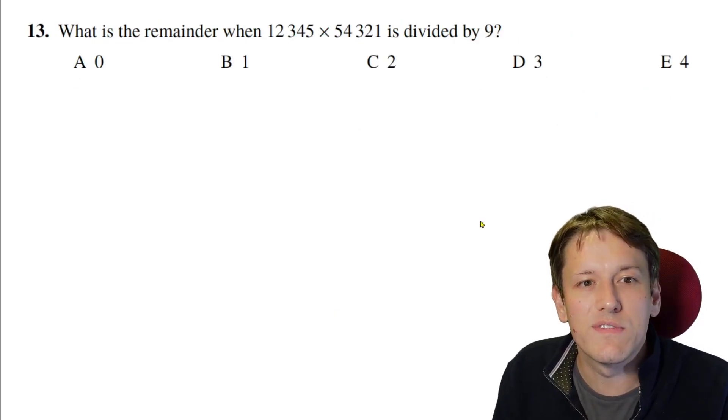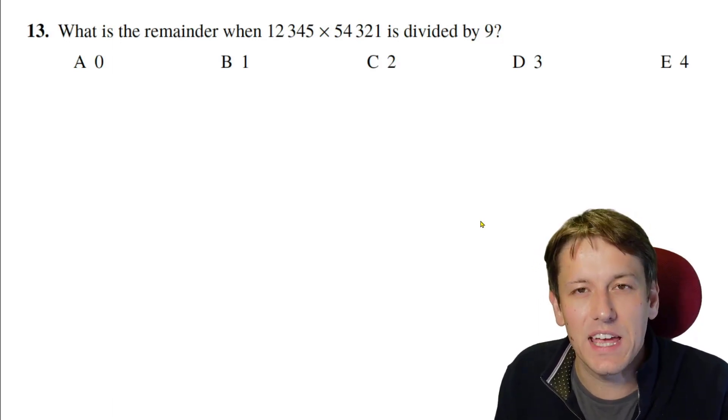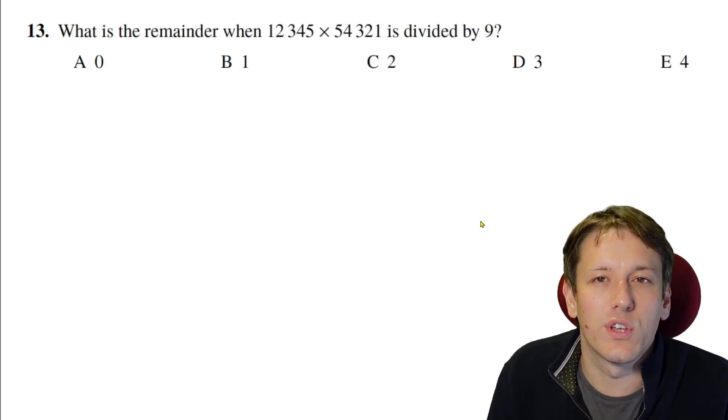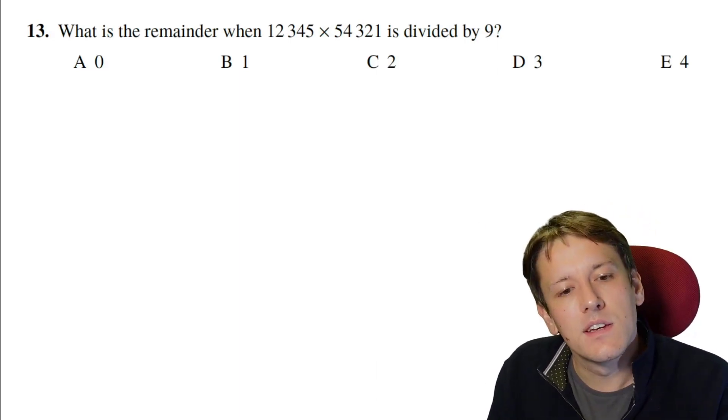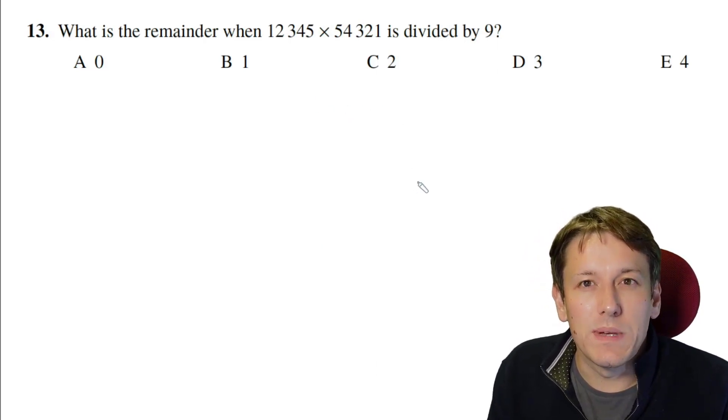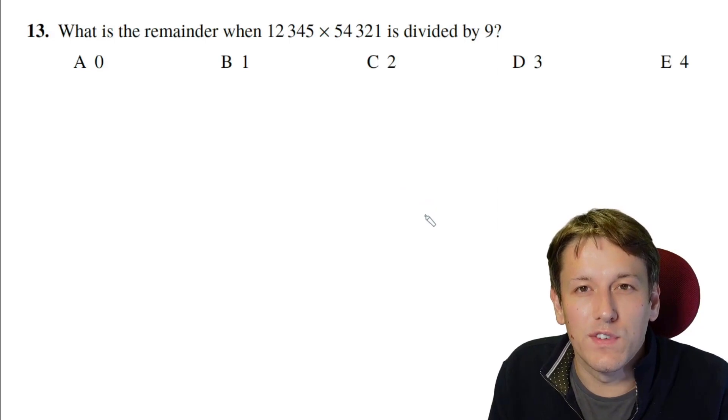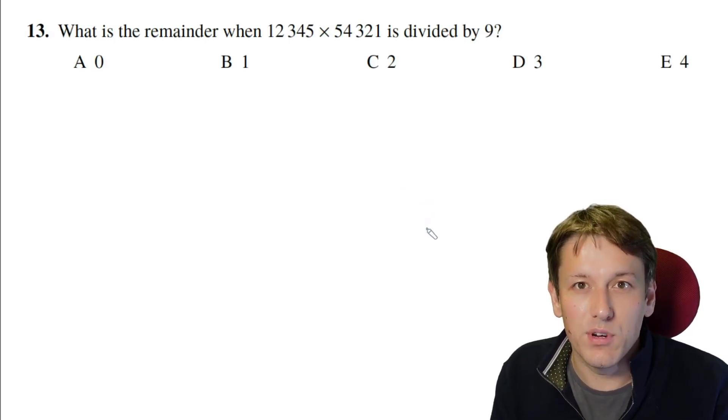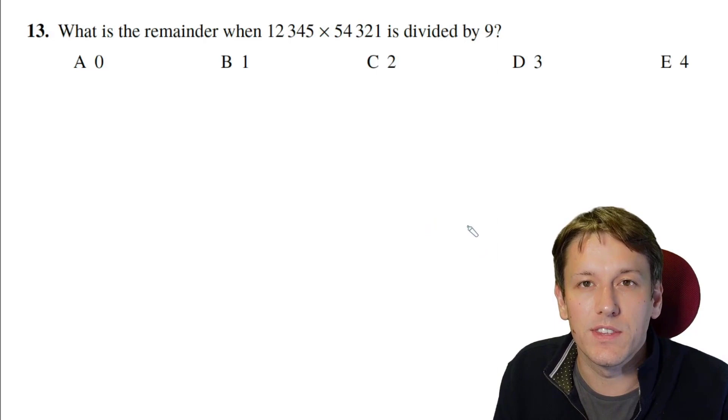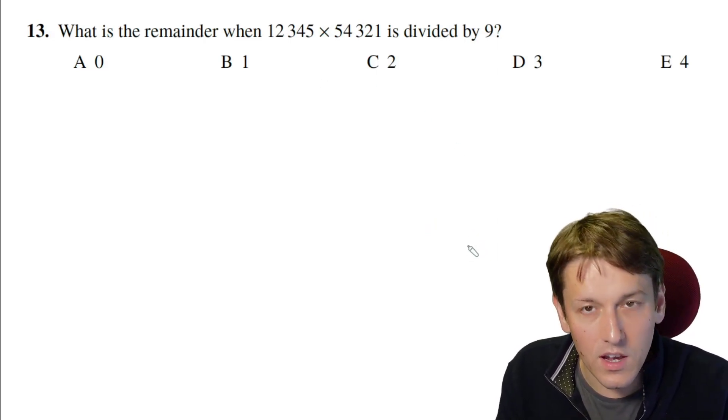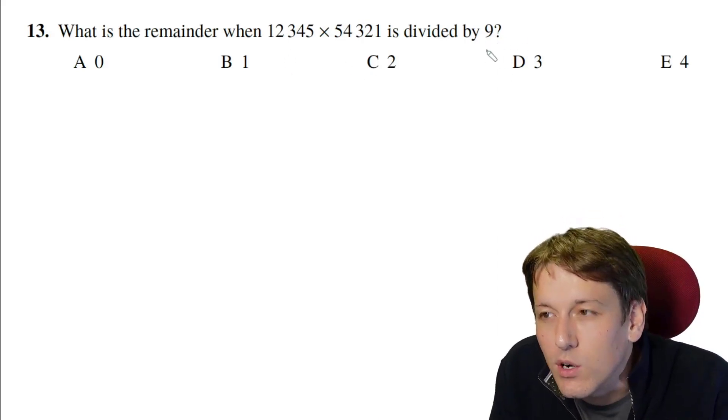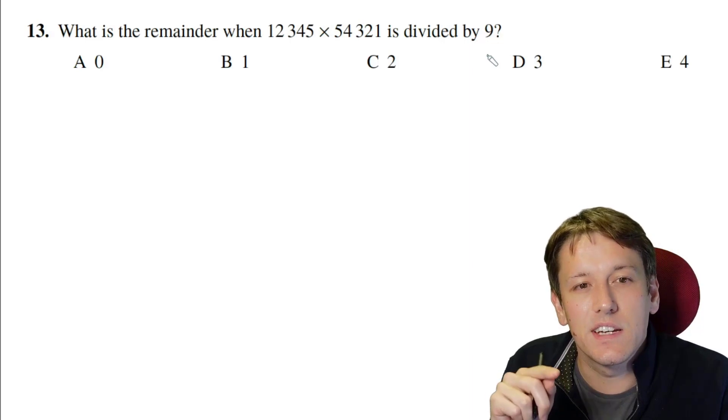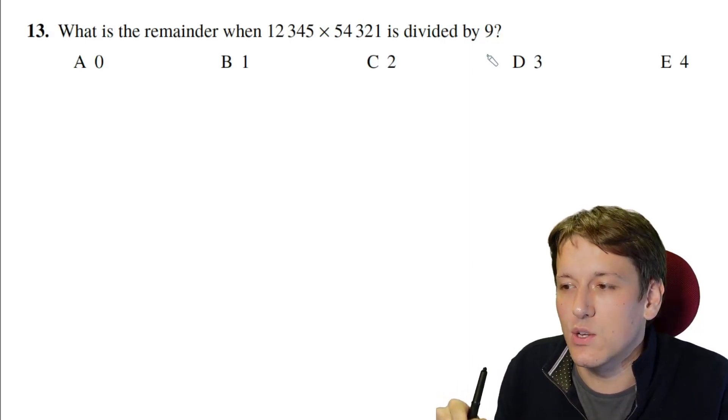What's the remainder when 12345 times 54321 is divided by 9? Now what we don't want to do here really is just to multiply these numbers together. That's going to be quite inefficient, although it would be one way of solving the problem. It might just cost you a bit of time. And divisibility tricks are things we should always be looking out for, and we cover those a lot more in the Go4Gold courses, both in the previous Junior Maths Challenge one and in the Intermediate Maths Challenge one that you can upgrade to from this course. And one of the divisibility tests is divisibility by 9, which maybe is what we would obviously think of going for here.